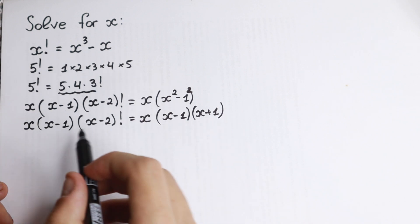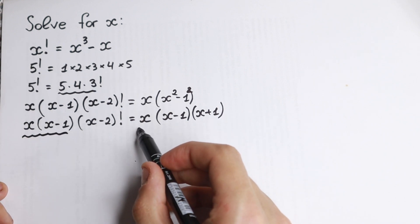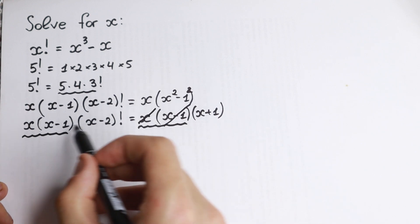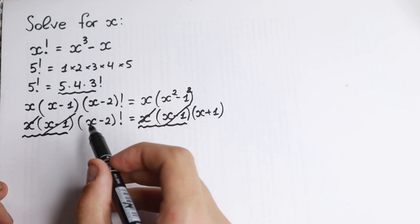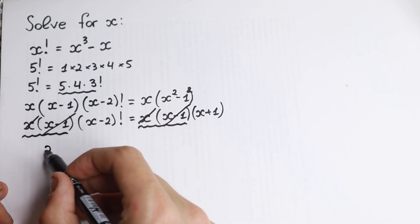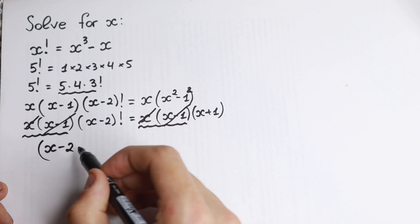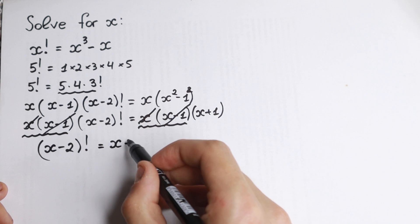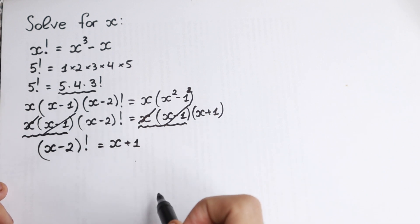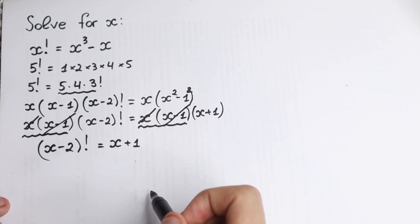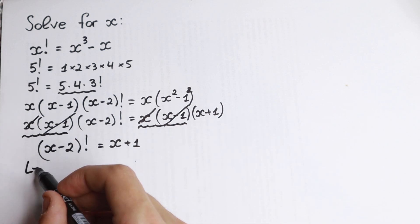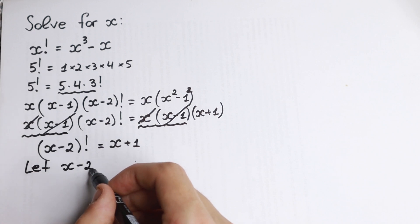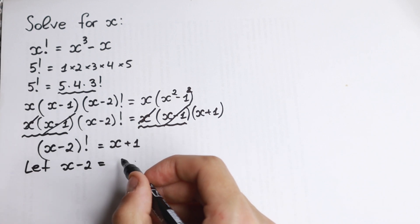Notice that x times (x minus 1) appears on both sides, so we can cancel those two elements. What remains is (x minus 2) factorial on the left and (x plus 1) on the right. Now let's use a substitution: let x minus 2 equal y.